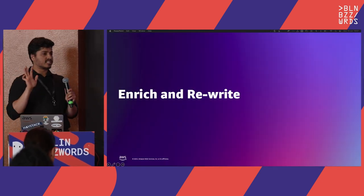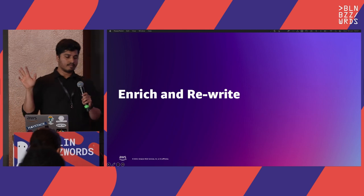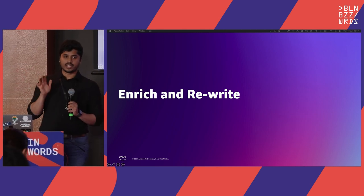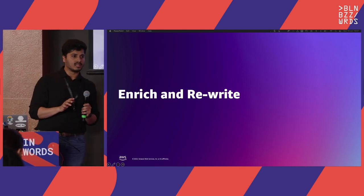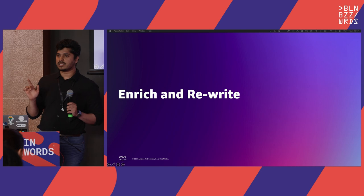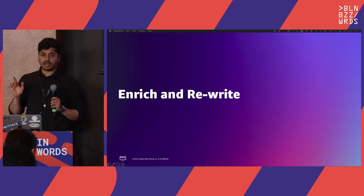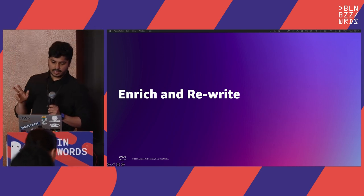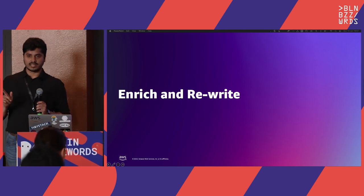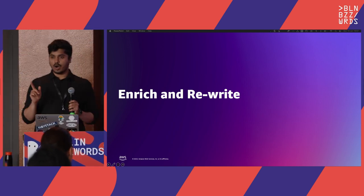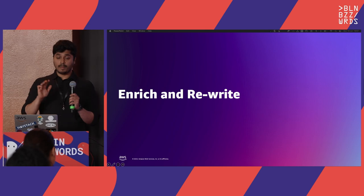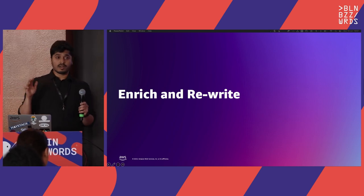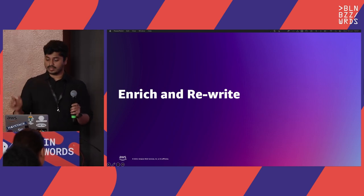We just covered one technique — text expansion using neural sparse search with OpenSearch. That's not all. We have two other techniques: enrich and rewrite. Let's see how they work to make your lexical search work like semantic search.